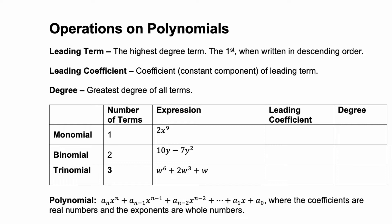First we have a monomial, and a monomial is a polynomial that just has one term, such as 2x to the ninth. The leading coefficient here is 2, because that is the constant of that leading term. And the degree is 9, because that is the largest value of our exponent.